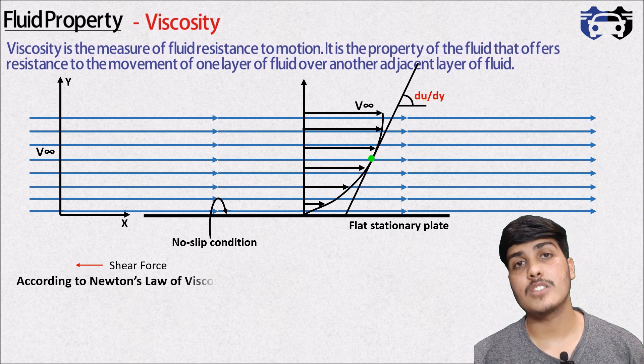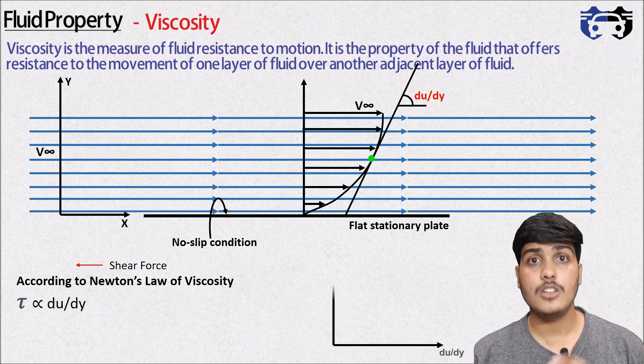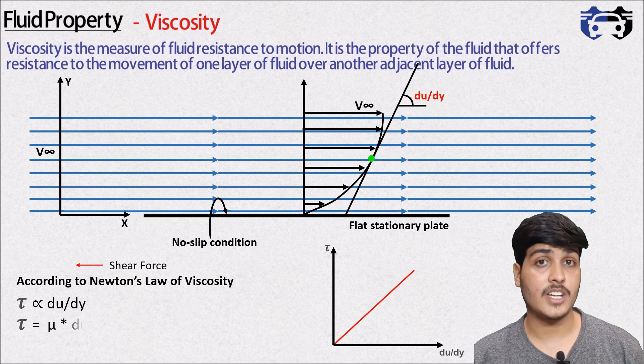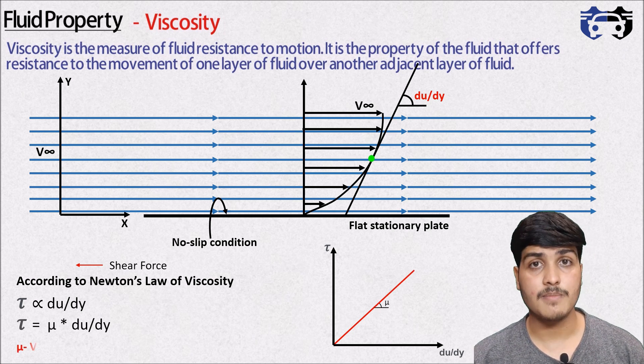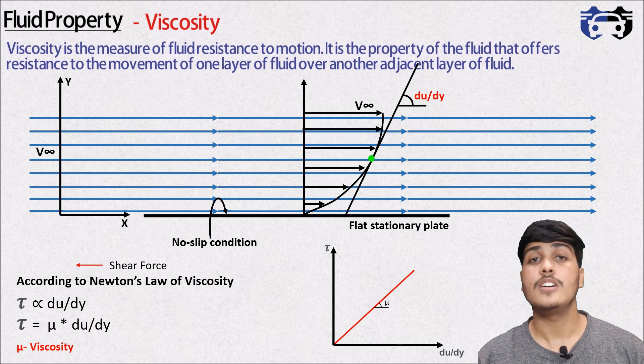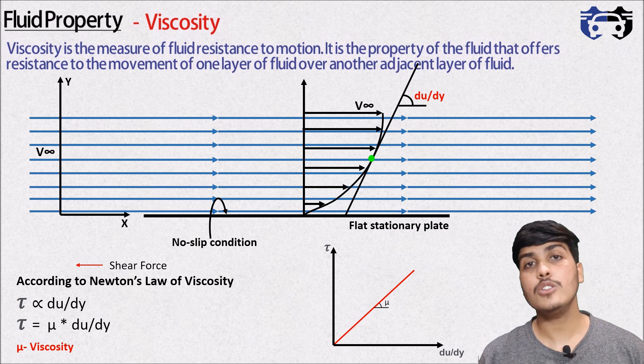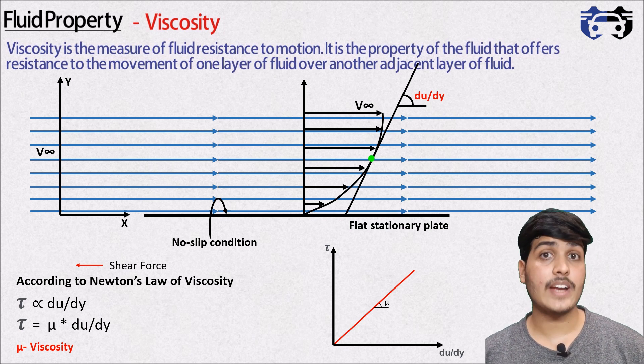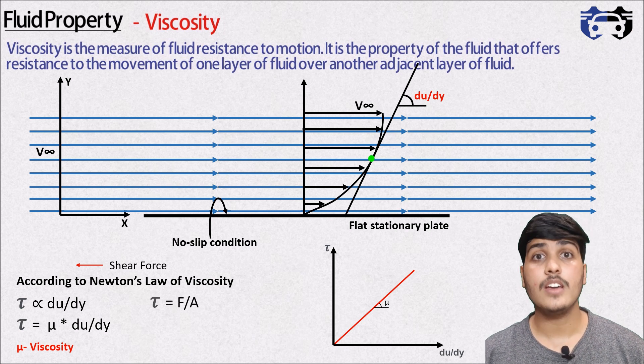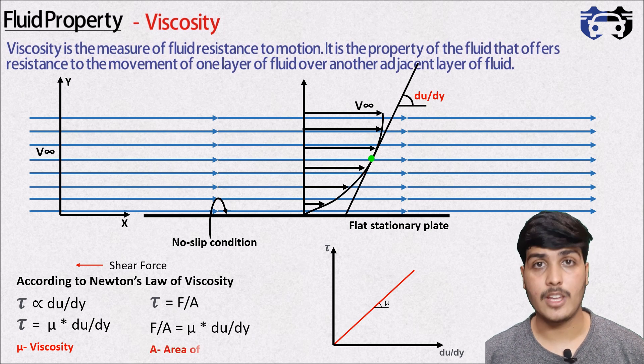According to Newton's law of viscosity, shear stress is directly proportional to velocity gradient. So as velocity gradient increases, shear stress also increases, and the proportionality constant here is called viscosity. So viscosity is the internal friction of fluid in motion and it smooths the difference in the velocity by increasing the shear stress in proportion to the velocity gradient. We can write shear stress equals to shear force divided by area. So f/a = μ × du/dy where a is the area of the plate.